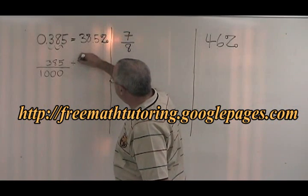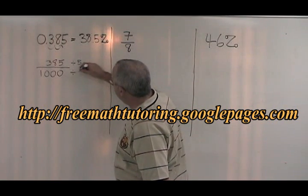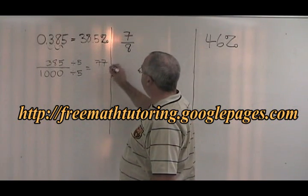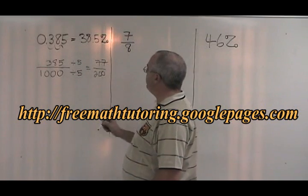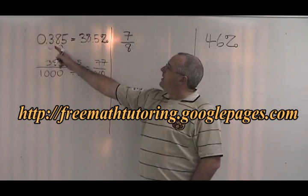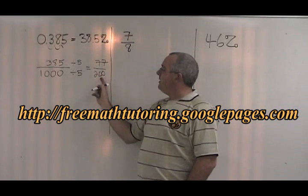If we divide both the top and the bottom by 5, we get 77 on the top and we get 200 on the bottom. This fraction cannot be reduced, so we are finished converting our decimal 0.385 to a fraction.